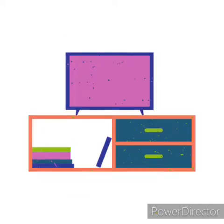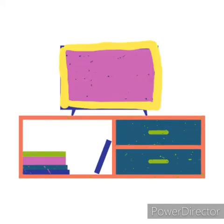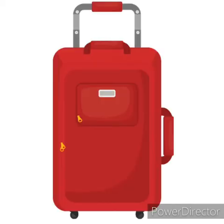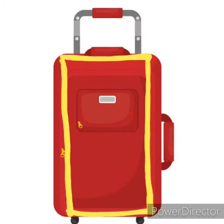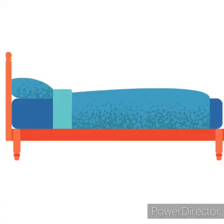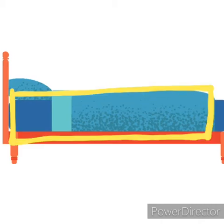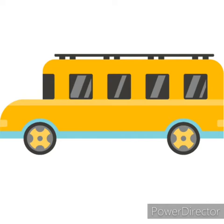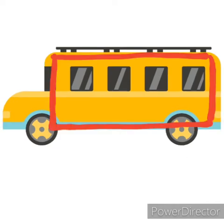This is a television, and the television is rectangle in shape. Next picture we have is luggage — the shape of this luggage is rectangle. And here is a picture of a bed, and the shape of a bed is also rectangle.